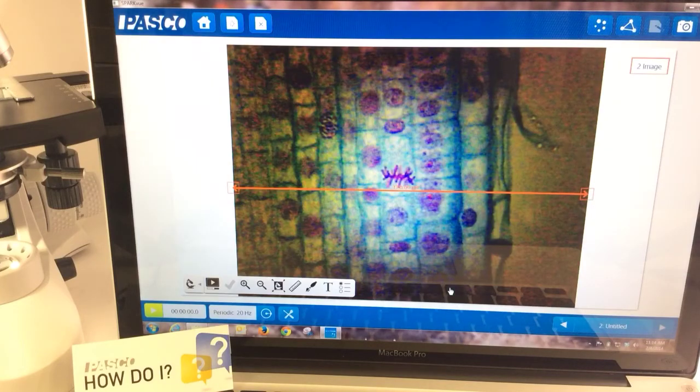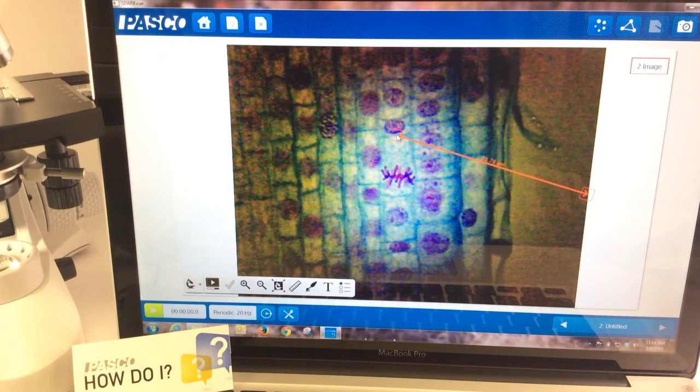So now I've set that the width of this image is 170 micrometers, and then I can grab the ends of those arrows and adjust those to other points on the screen. So for example, maybe I want the height or length of this onion cell.